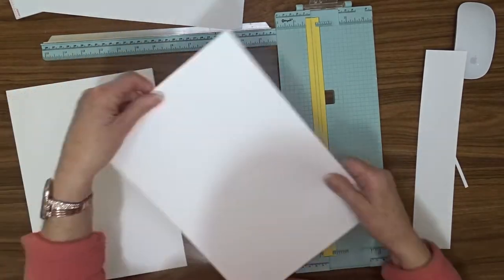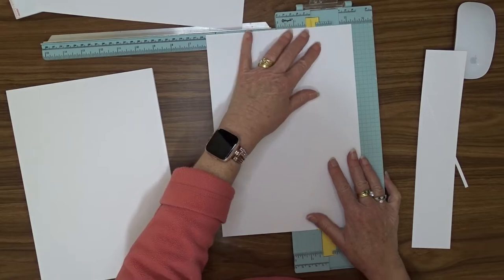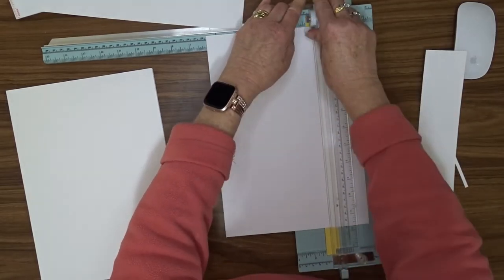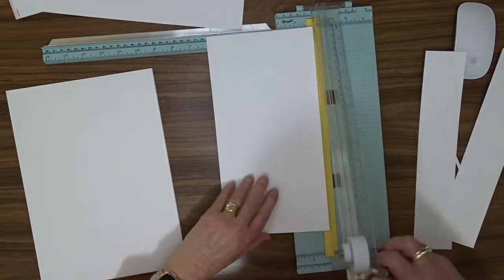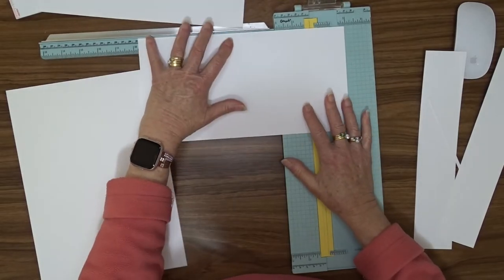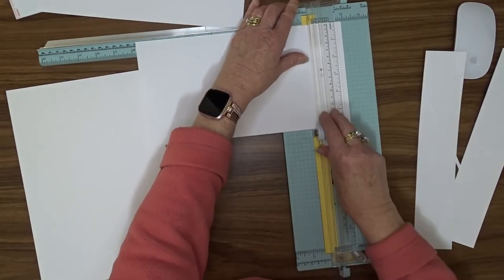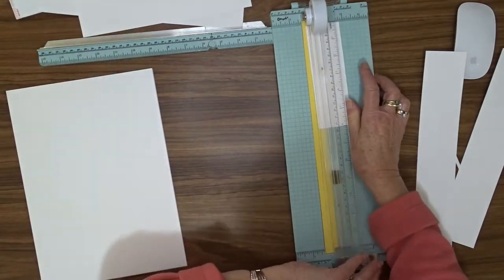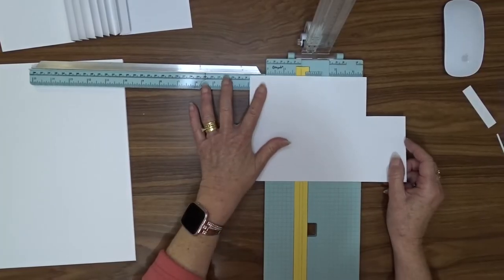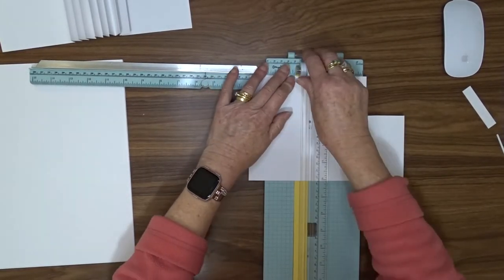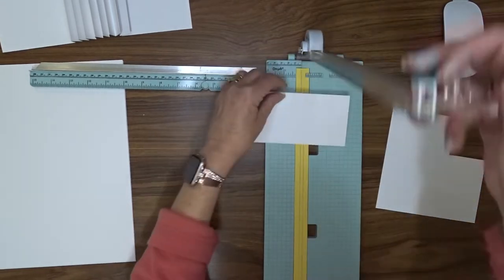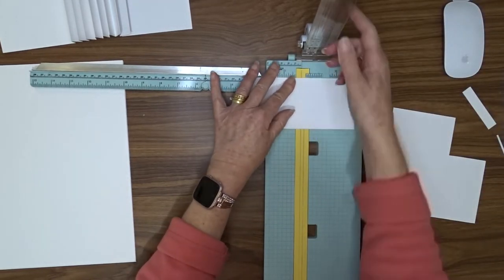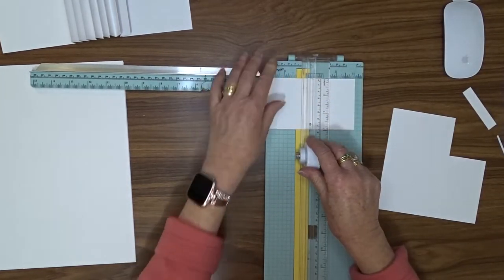The second piece of cardstock I'm going to cut at 6 inches by 9 and a quarter. And then I'm going to cut 16 pieces that are 3 inches by 2 and 15 sixteenths. So just slightly less than 3 inch square. So one side is 3 inches and one is a sixteenth of an inch less than 3 inches. So I'm going to cut 16 of those.